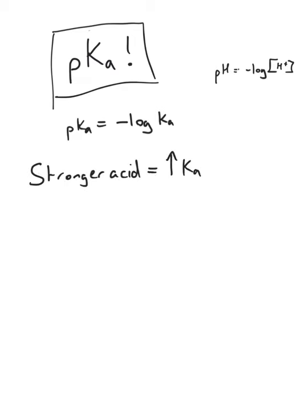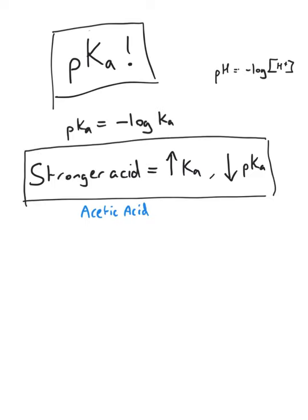The stronger the acid, the larger the Ka, or smaller the pKa. For example, acetic acid, which is the acid in vinegar, has a pKa of 4.75 and a Ka of 1.8 times 10 to the negative 5.